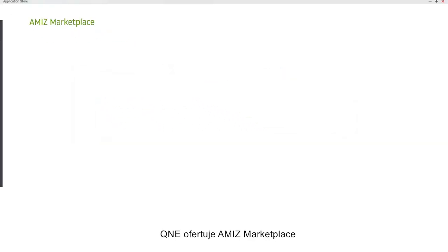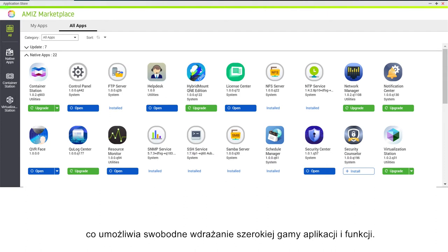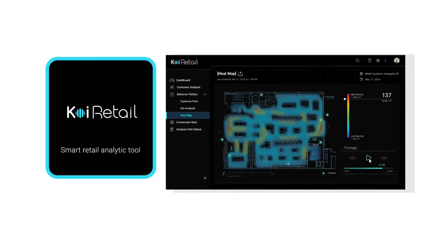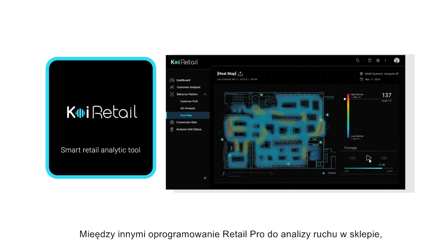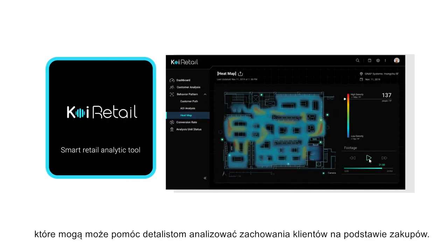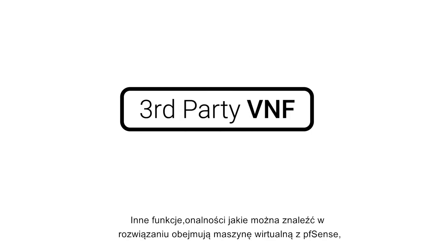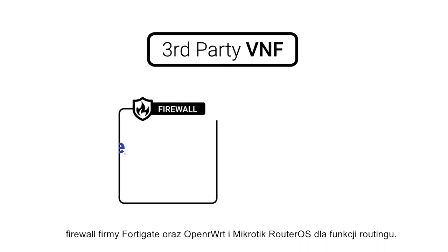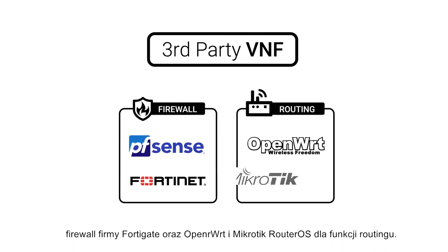QWAN-E features the Amiz Marketplace, which enables you to freely deploy a wide array of virtual network functions and applications. This includes the RetailPro store traffic analytics software, which can help retailers analyze visitor behavior based on their shopping journey. Other third-party virtual network functions include PFSense, FortiGate for firewall functions, or OpenWRT and RouterOS for routing functions.